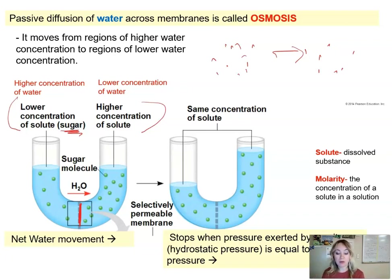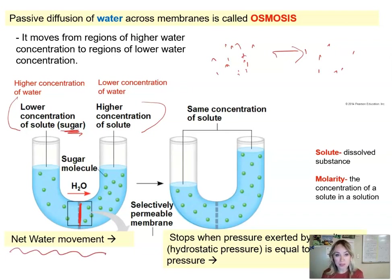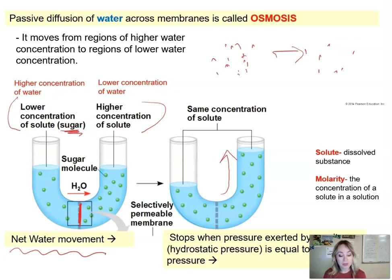We already established that water moves from regions of higher water concentration to lower. So you can see how we observe the net water movement from left to right, and as a result the water column is going to be rising. The rising of this water column will stop when the pressure exerted by gravity — which we call hydrostatic pressure — is equal to osmotic pressure.